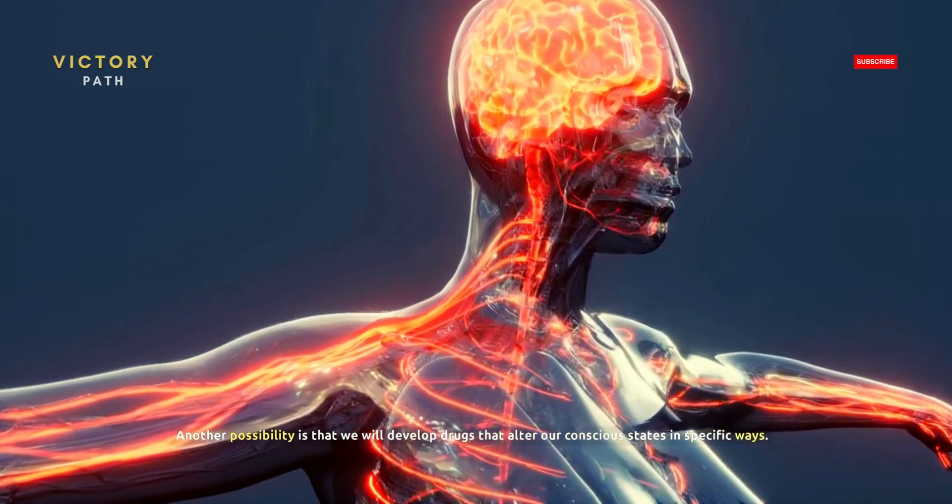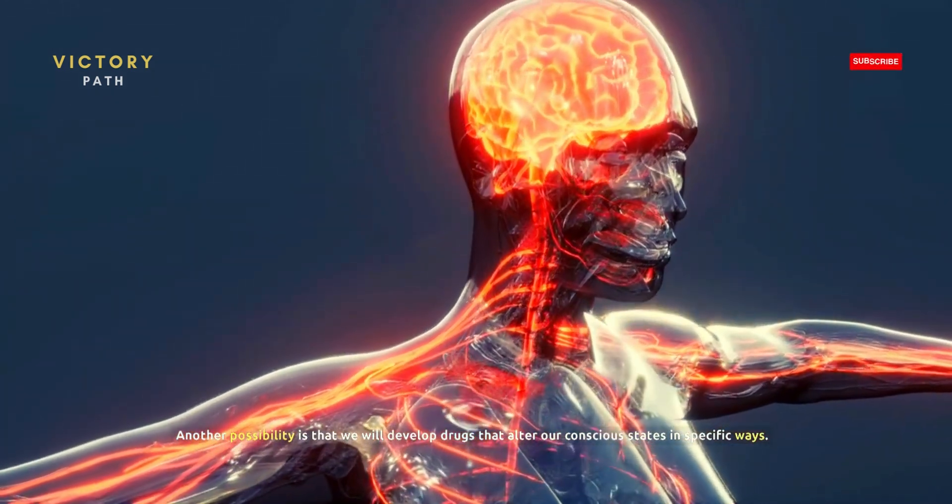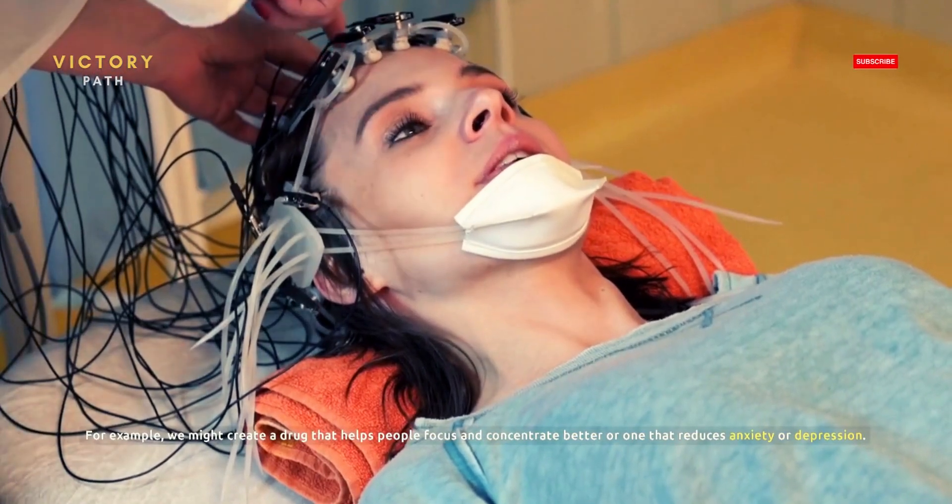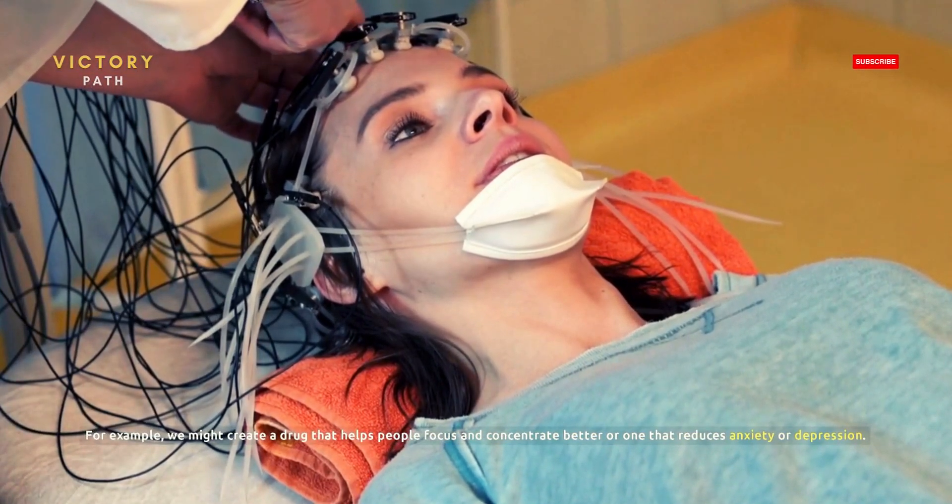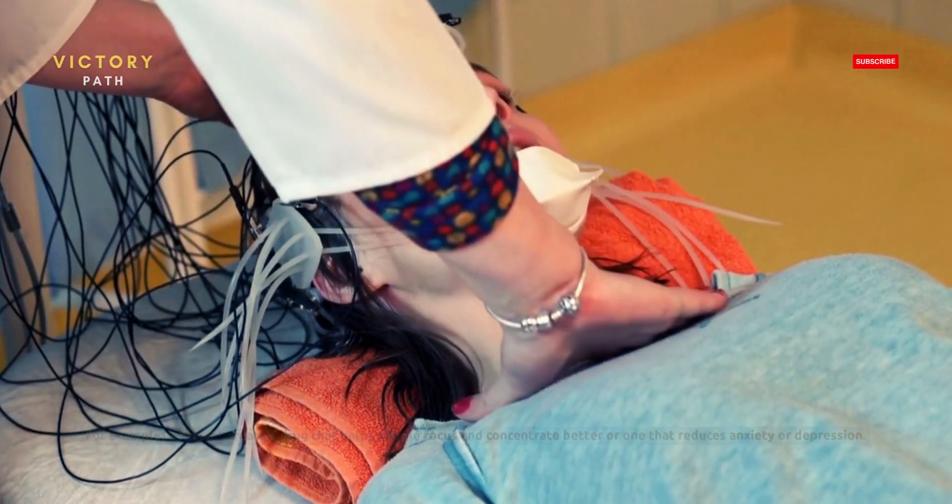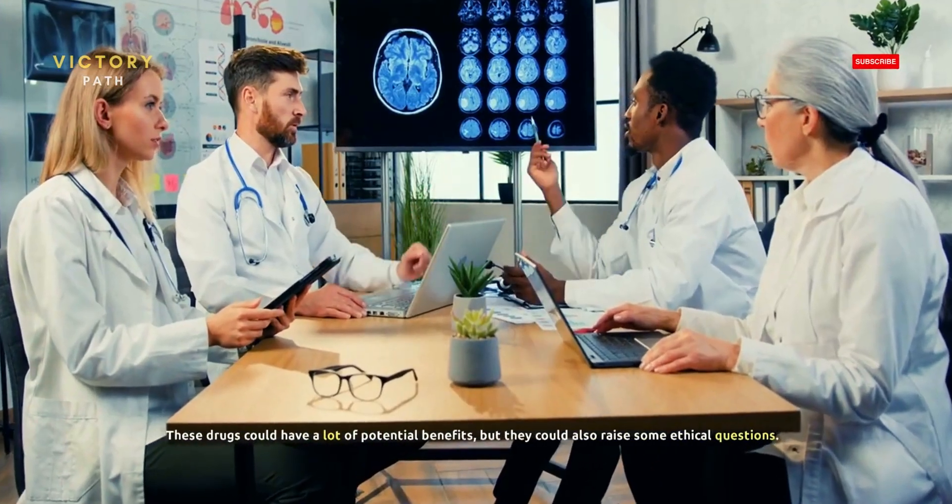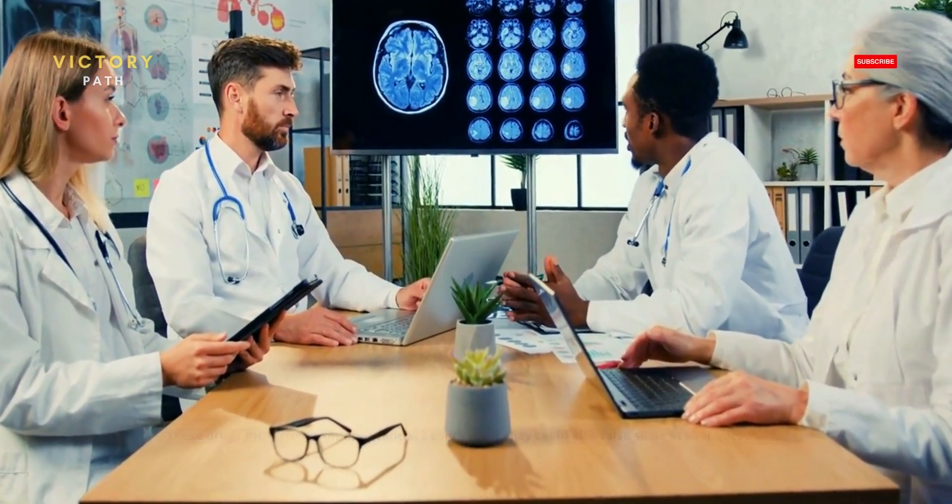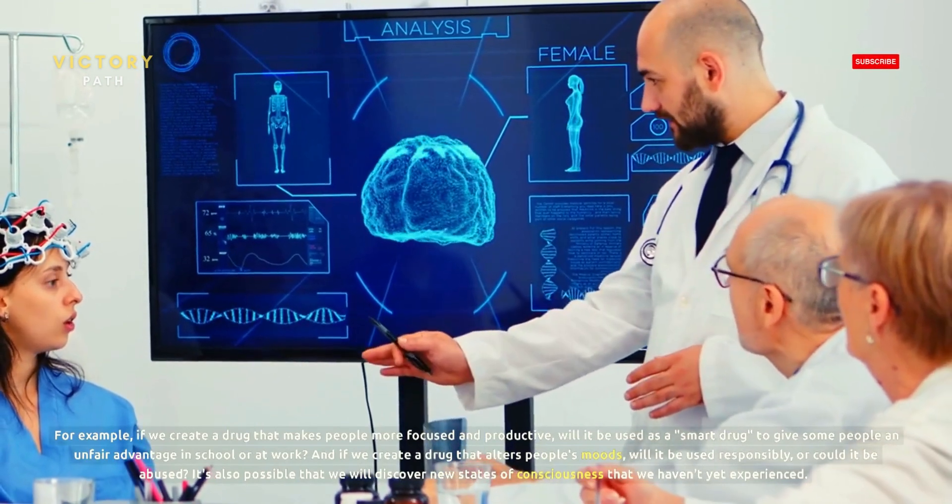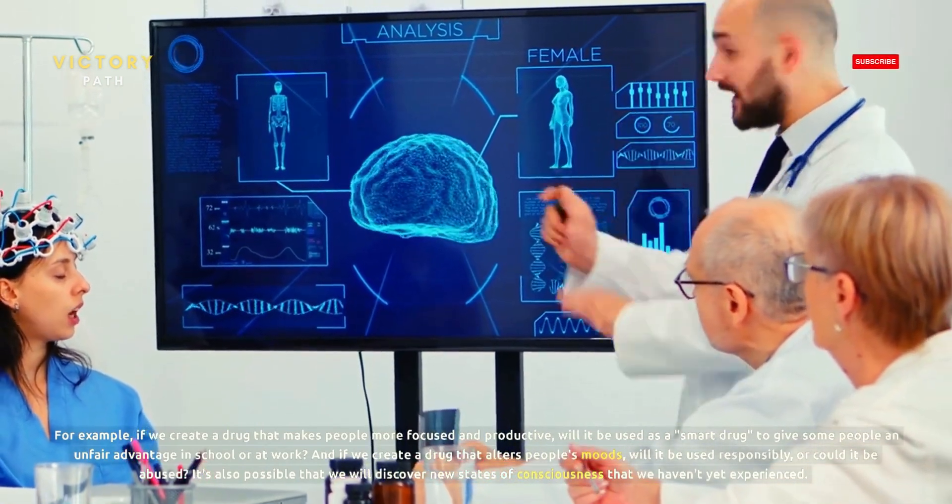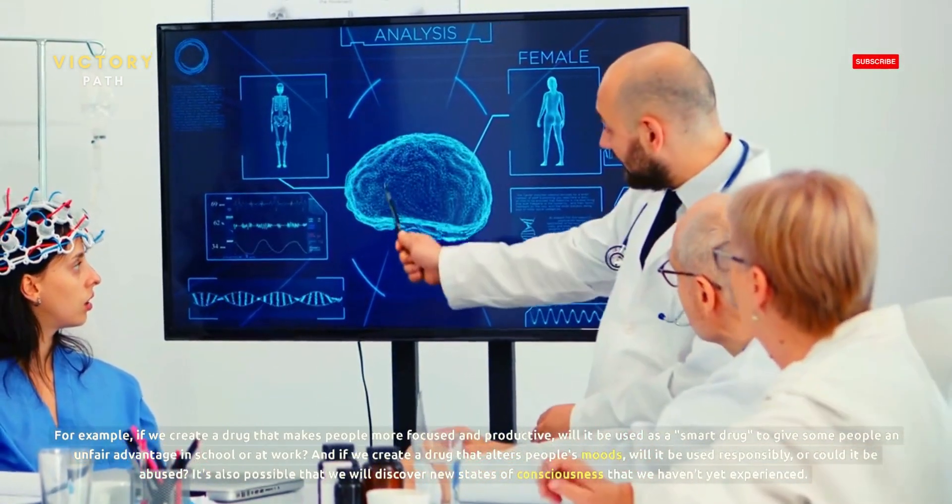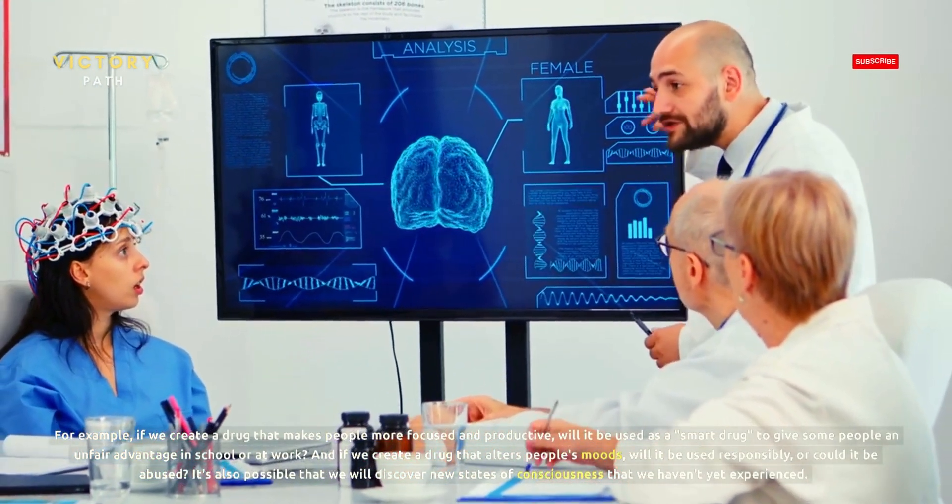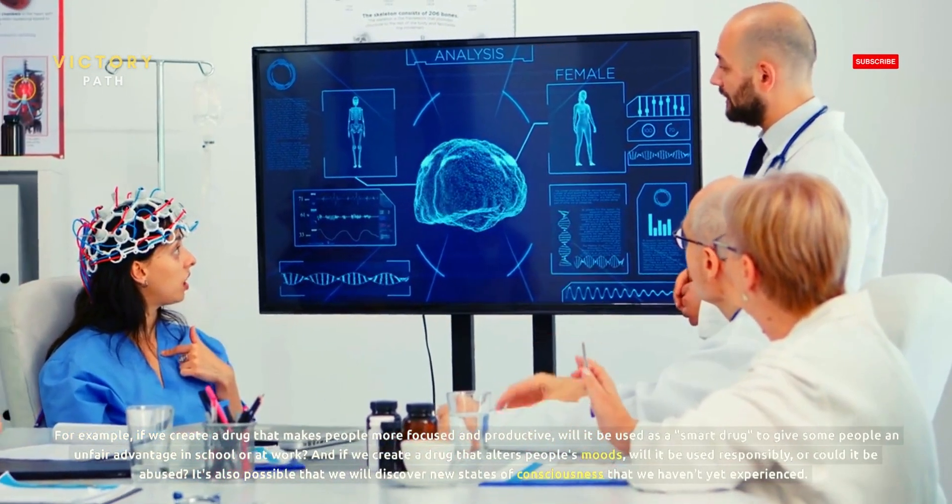Another possibility is that we will develop drugs that alter our conscious states in specific ways. For example, we might create a drug that helps people focus and concentrate better, or one that reduces anxiety or depression. These drugs could have a lot of potential benefits, but they could also raise some ethical questions. For example, if we create a drug that makes people more focused and productive, will it be used as a smart drug to give some people an unfair advantage in school or at work? And if we create a drug that alters people's moods, will it be used responsibly or could it be abused?